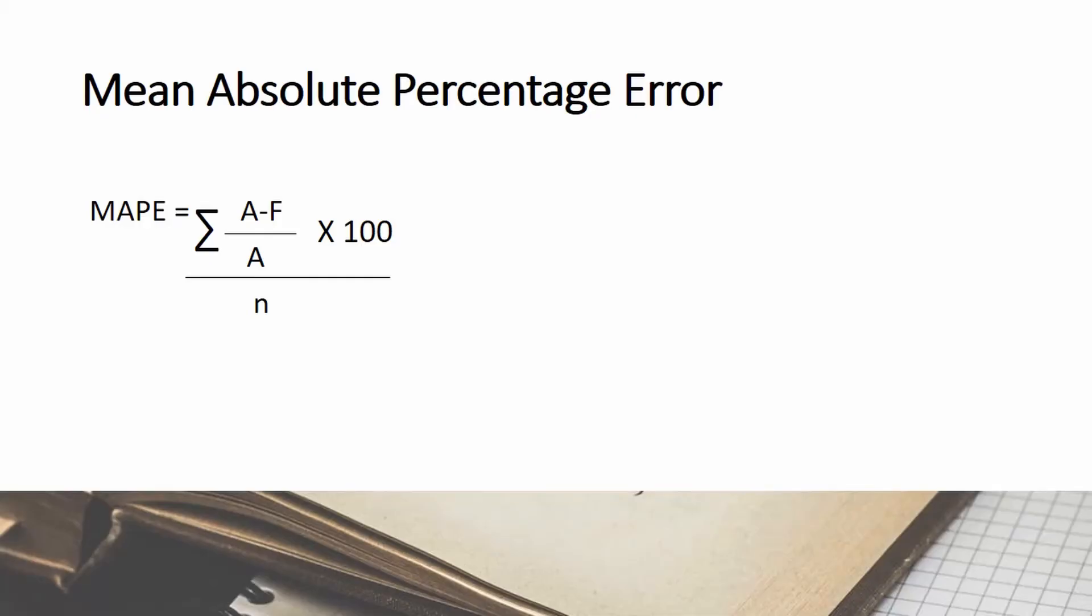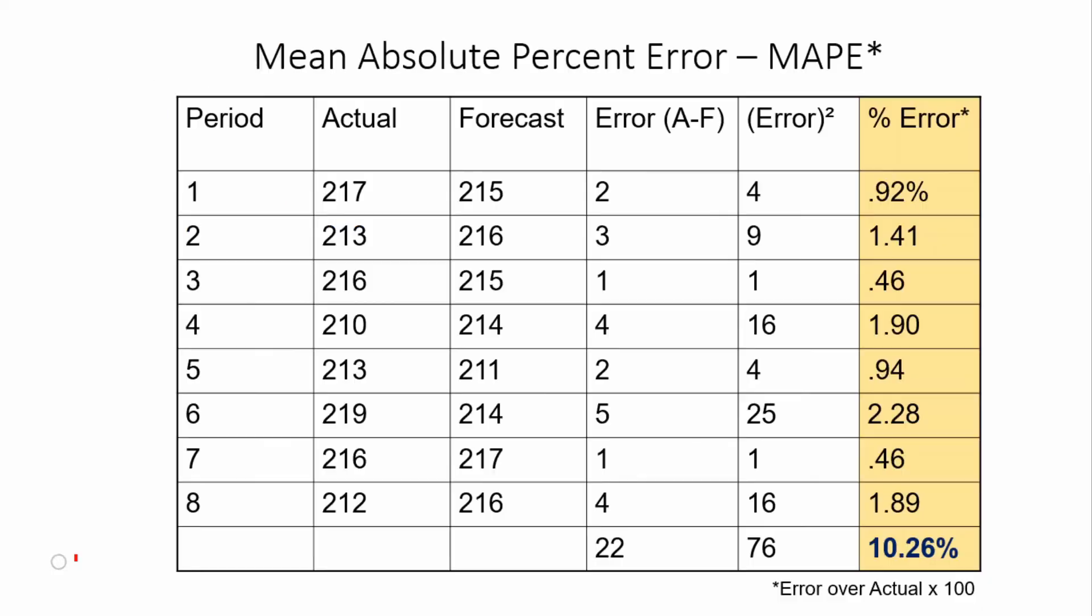Now for mean absolute percentage error. MAPE is calculated using the absolute error in each period divided by the actual, then getting the percentage by multiplying by 100. We get the summation of the percentages and divide it by n, or the number of data.